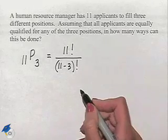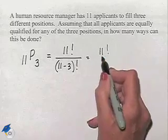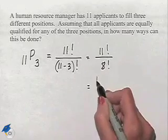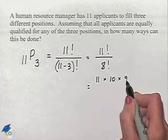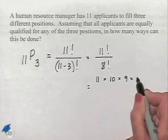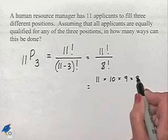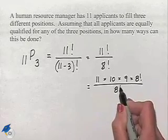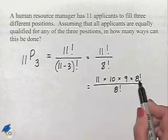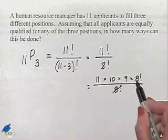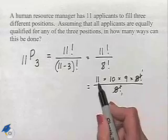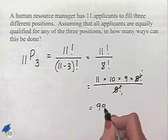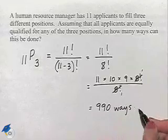Now let's evaluate this. This is going to be 11 factorial divided by 8 factorial. We can write out 11 times 10 times 9, and of course this would be 8 times 7 times 6 all the way down to 1, which we can write as 8 factorial. The numerator and denominator have these common factors, so 8 factorial cancels out to give us 1. Now we multiply 11 times 10 times 9 to give us our value of 990 different ways to fill these positions.